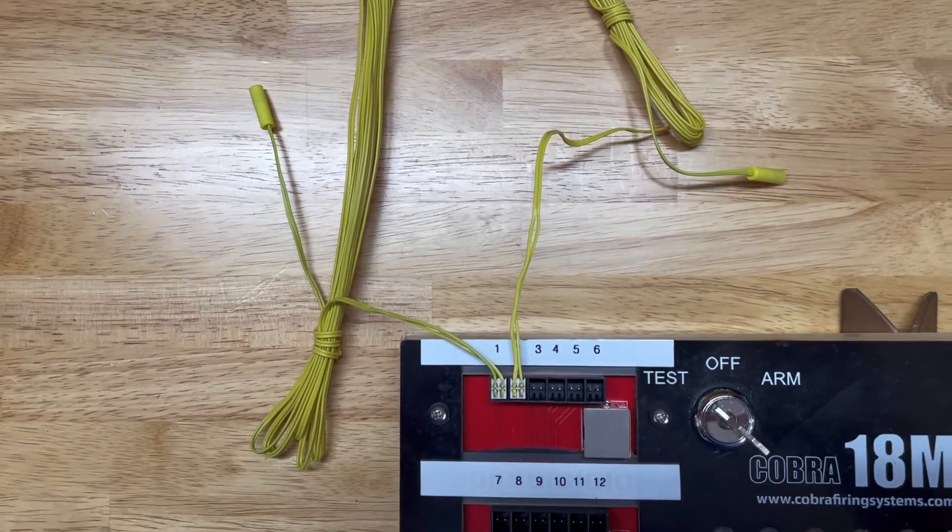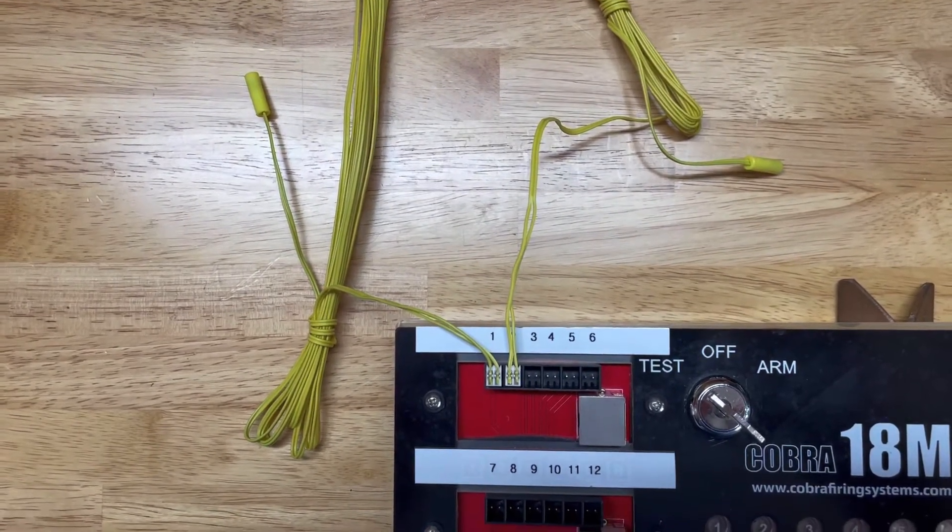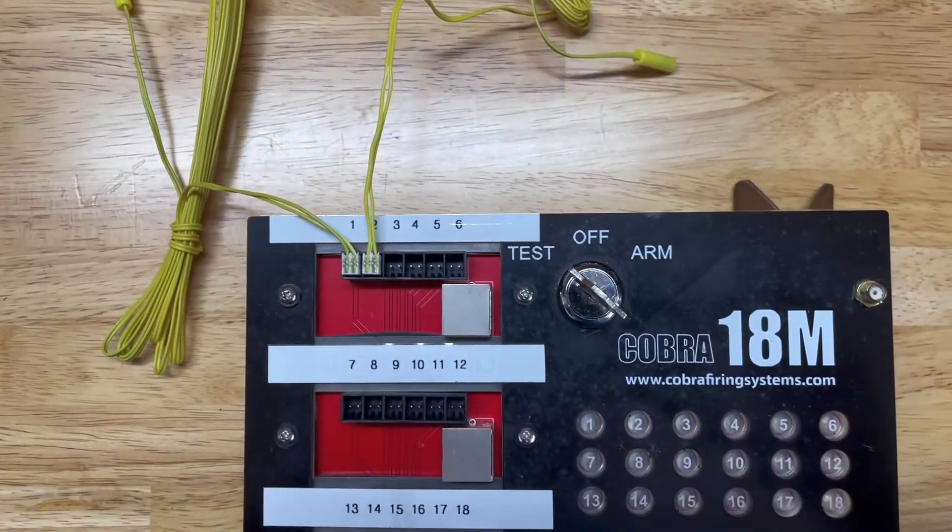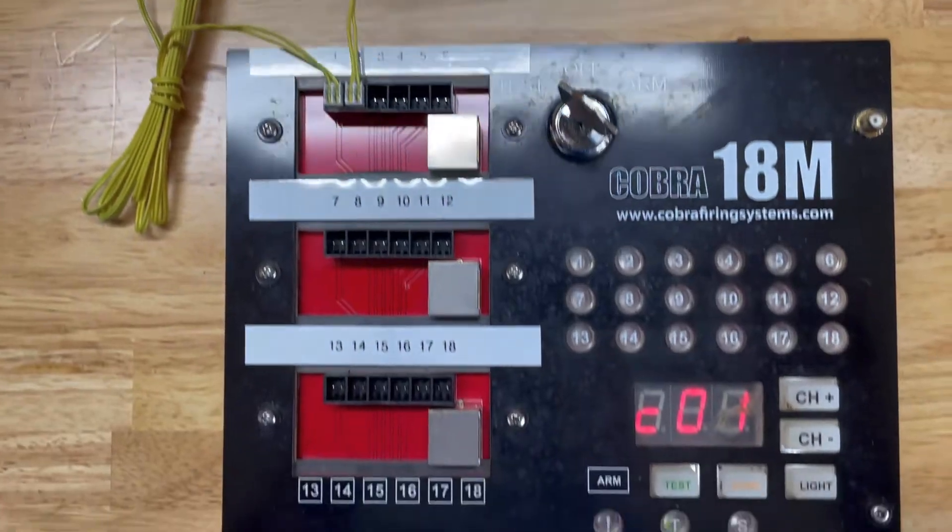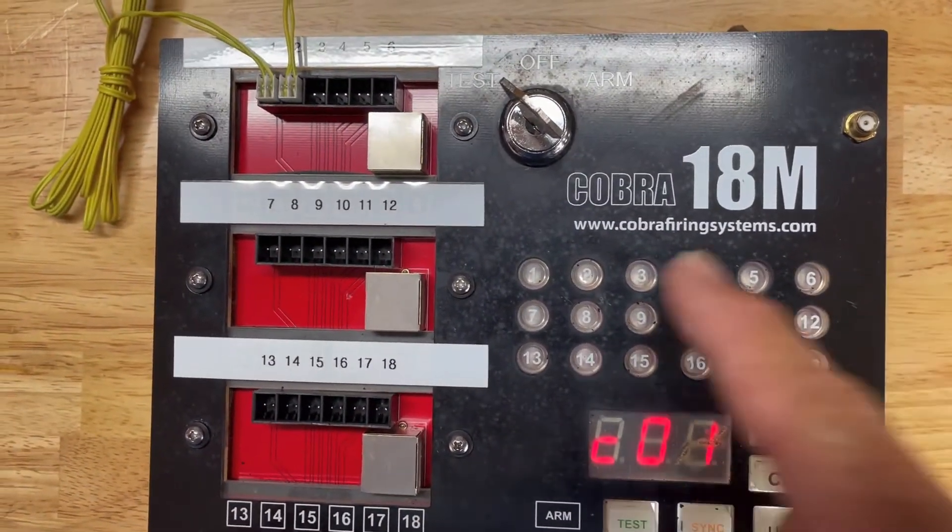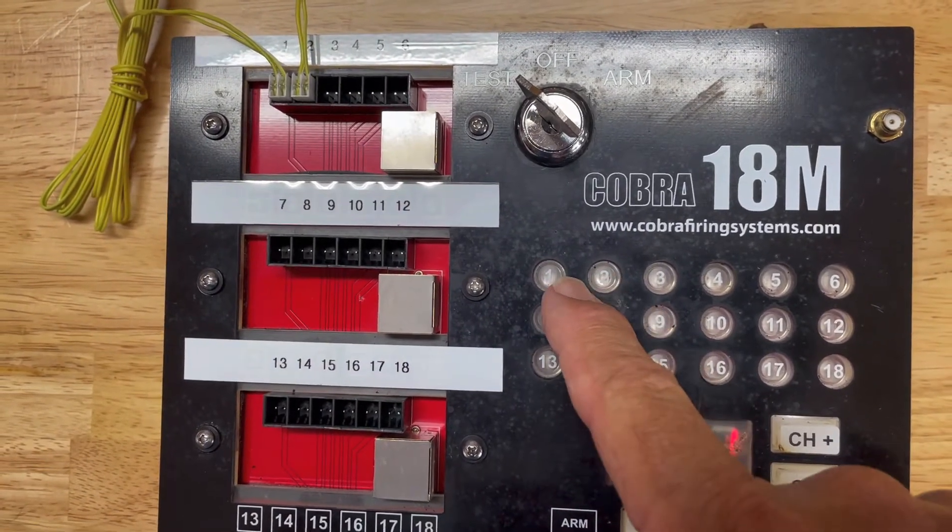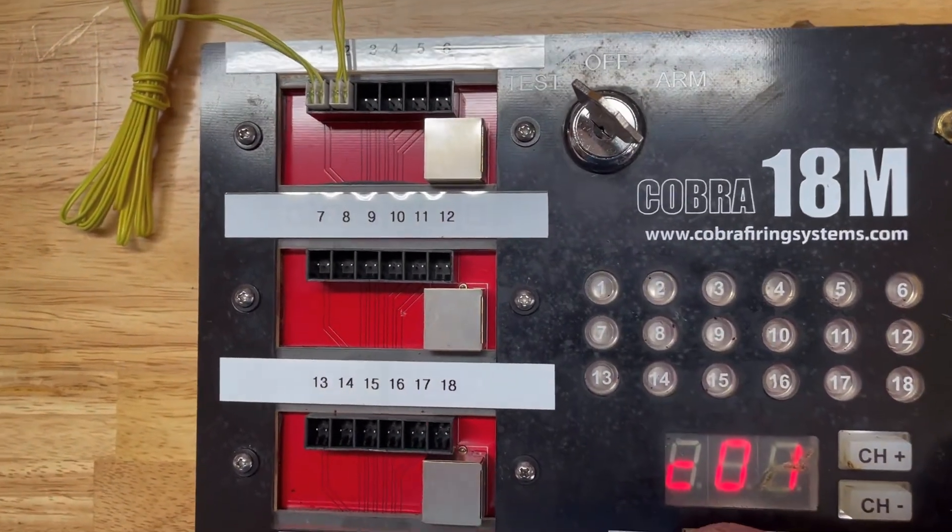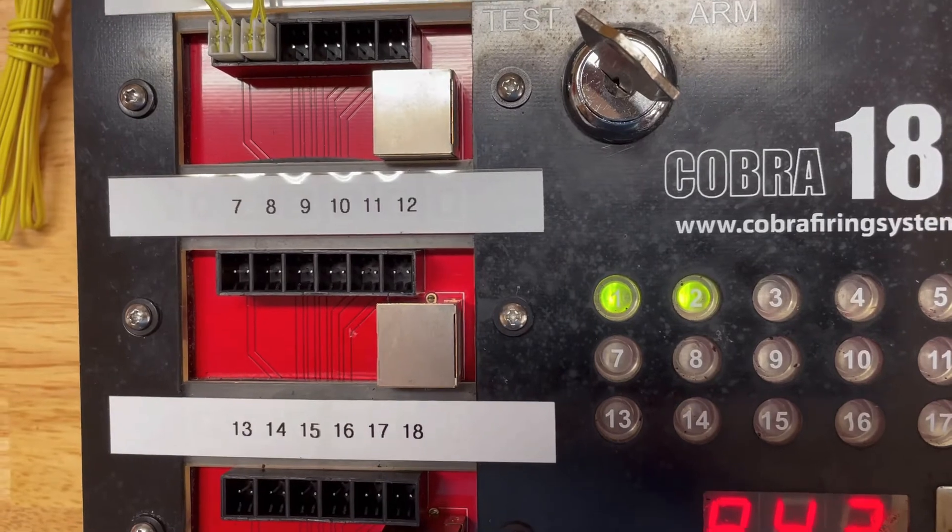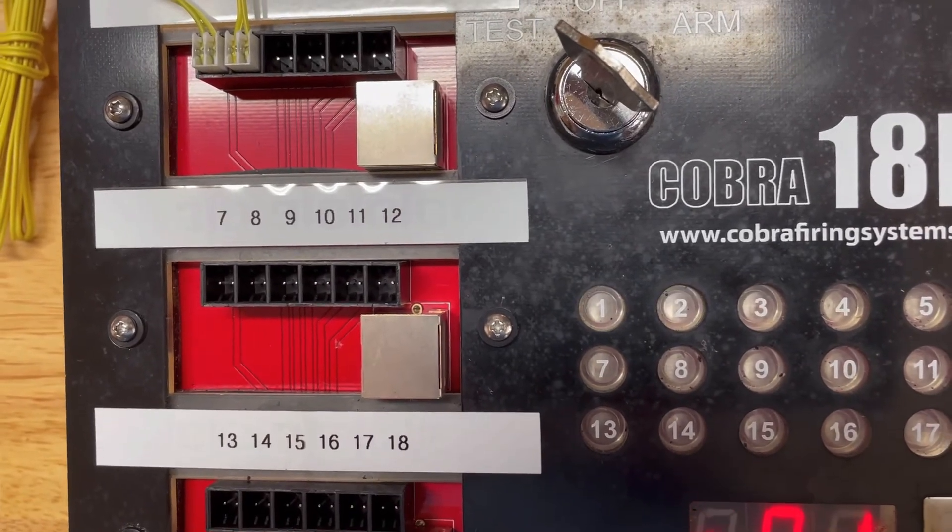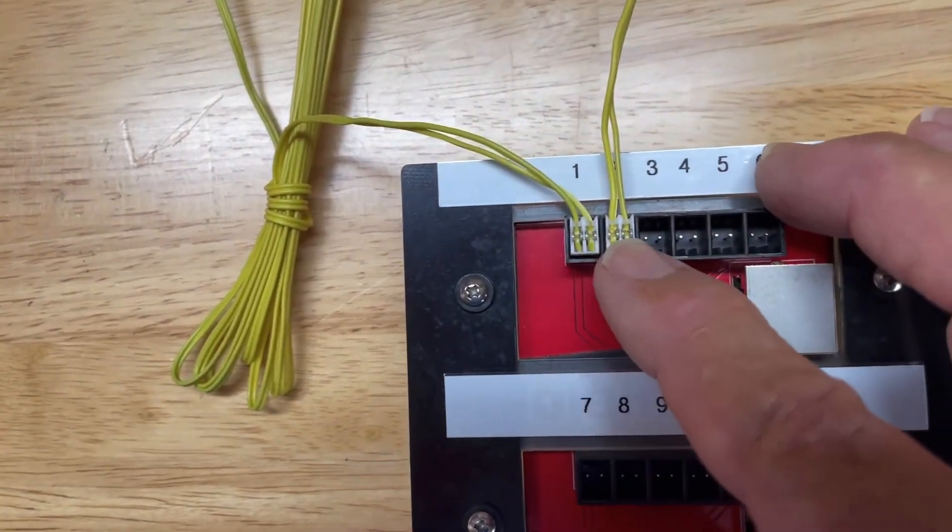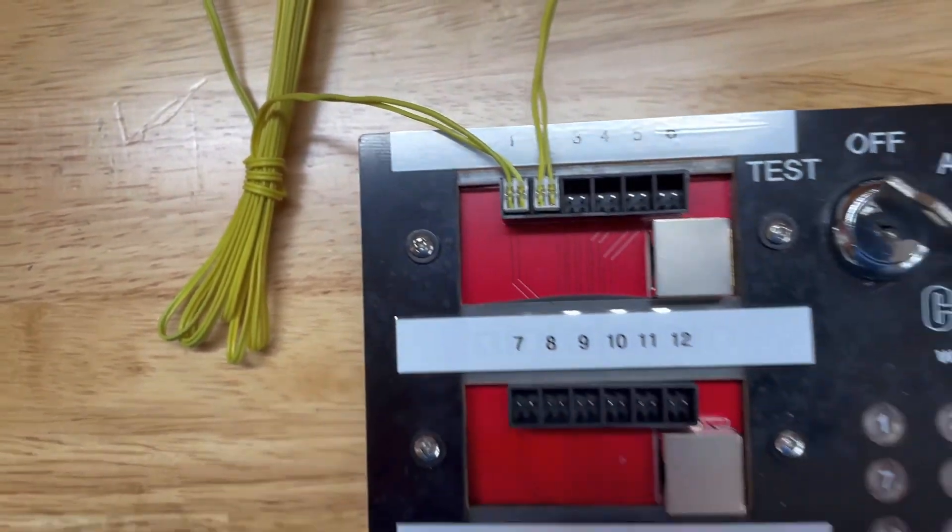Okay, here's my two e-matches that I put quick plug connectors on. I plugged them into the Cobra module into Cues 1 and 2. I've got the Cobra in test mode. Let's push the test button and see if we get continuity on Cues 1 and 2 here. Let's get down a little closer. Looky there. So for my first ever application of quick plugs that I applied with that cheap little plastic tool, it worked and I got continuity.